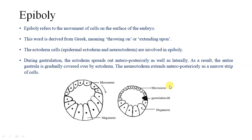Ectodermal cells — epidermis ectoderm and the neuroectoderm — are involved in epiboli. During gastrulation, the ectoderm spreads out anteroposteriorly as well as laterally. As a result, the entire gastrula is gradually covered by ectoderm. The ectoderm extends anteroposteriorly as a narrow strip of cells.